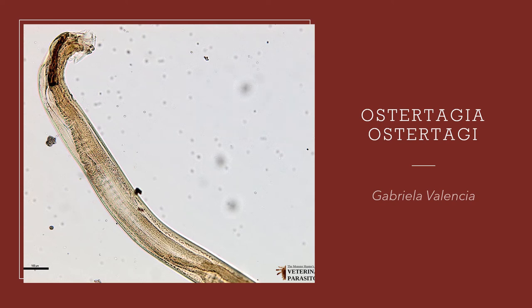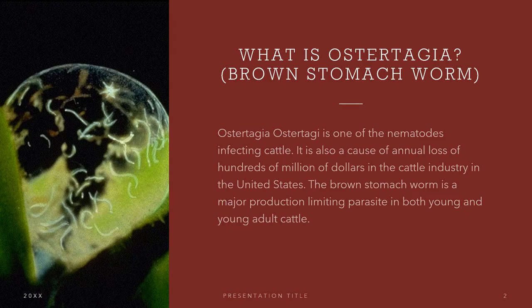Today's topic is about an internal parasite: Ostertagia ostertagii, also known as the brown stomach worm. It is one of the nematodes infecting cattle and a cause of annual loss of hundreds of millions of dollars in the cattle industry in the United States. The brown stomach worm is a major production-limiting parasite in both young and young adult cattle.